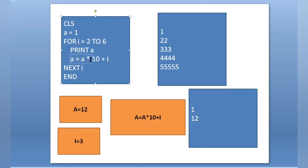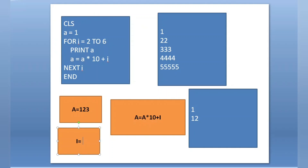After printing, a = a * 10 + i again. The value of a is 12, so 12 * 10 = 120, plus i which is 3, gives 123. We got the value 123 in a. Next i — i is incremented by 1 to 4. Control goes back to the for loop and checks: is i = 4 in the range 2 to 6? Condition is true. PRINT a — a is 123, so 123 will be printed.